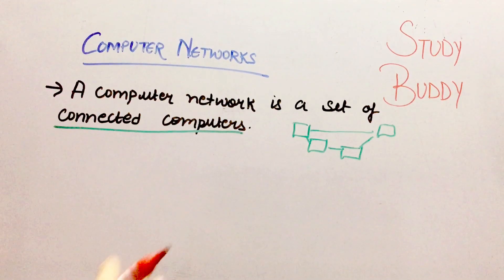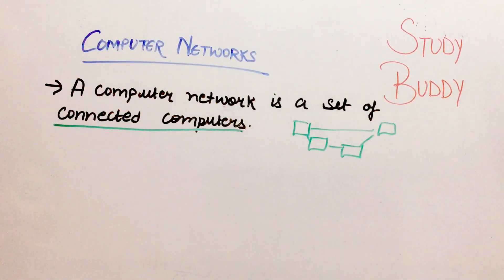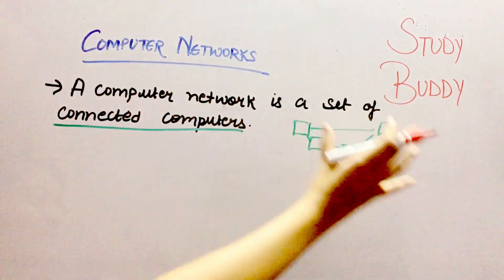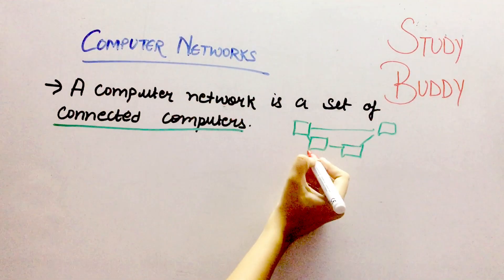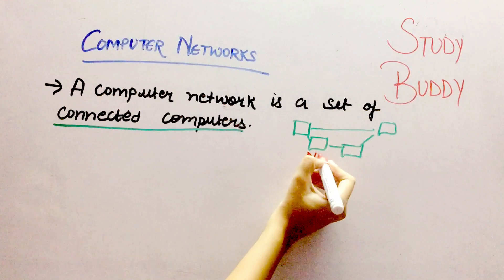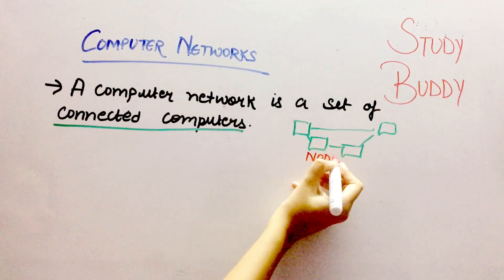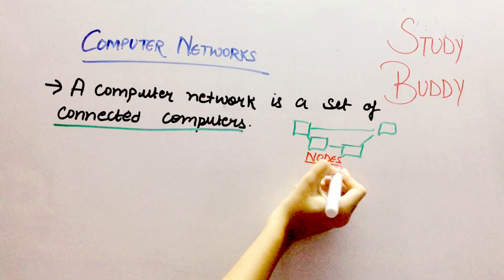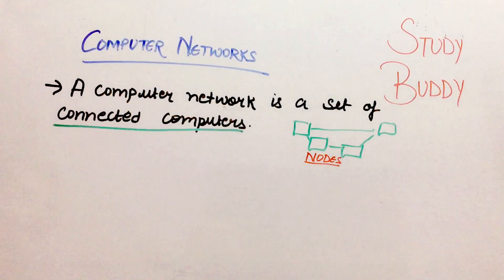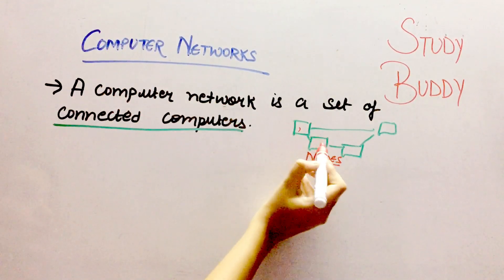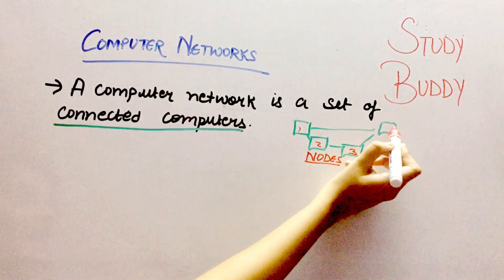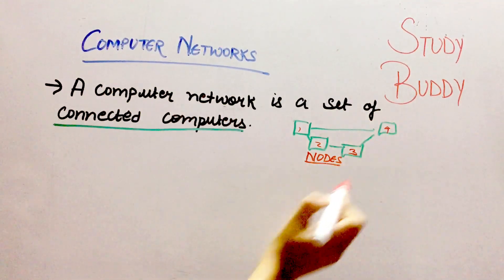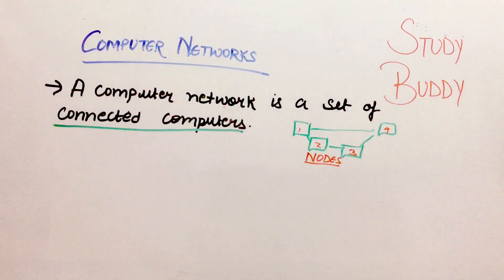When these computers are in a network, we denote them as nodes. So this is your node 1, node 2, node 3 and node 4. We denote something like this.